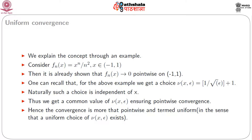Let us consider some examples. First, consider the sequence of functions x^n / n² for x belonging to the open interval (−1, +1). We have already seen that f_n(x) tends to 0 pointwise on (−1, +1). One can recall that for this example, we get a choice ν(x, ε) which equals ⌊1/√ε⌋ + 1. Such a choice is independent of x, giving a common value of ν(x, ε) ensuring pointwise convergence — a range of values of n independent of x.